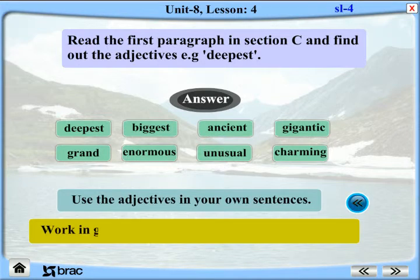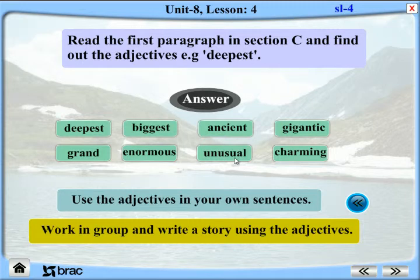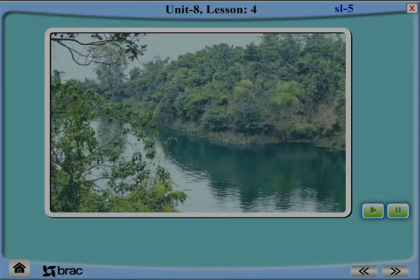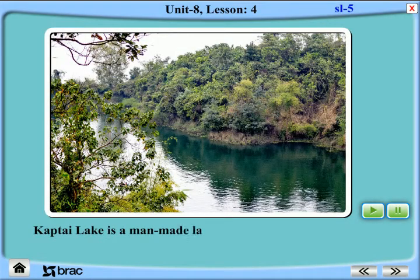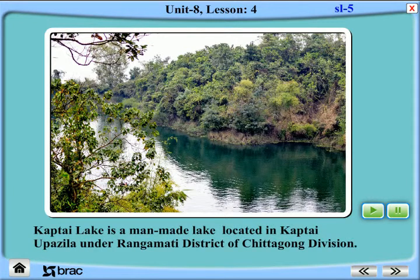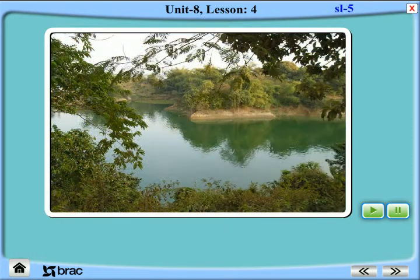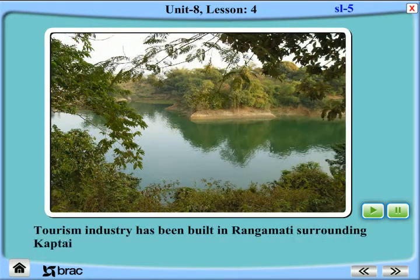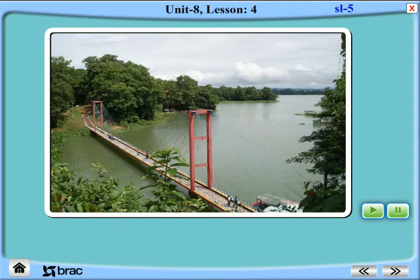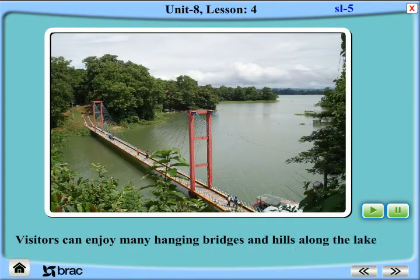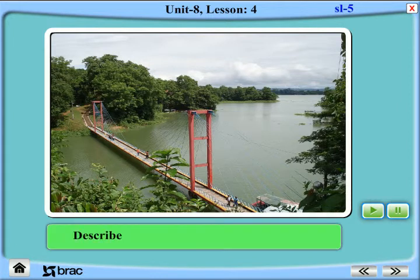Work in groups and write a story using the adjectives. Kaptai Lake is a man-made lake located in Kaptai Upazilla under Rangamati District of Chittagong Division. Tourism industry has been built in Rangamati surrounding Kaptai Lake. Visitors can enjoy many hanging bridges and hills along the lake. Describe the natural beauty of Kaptai Lake.